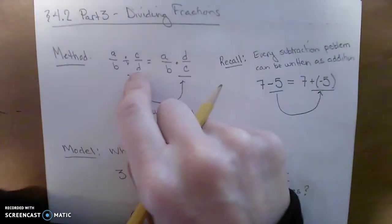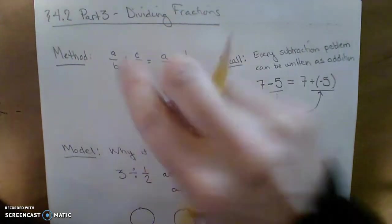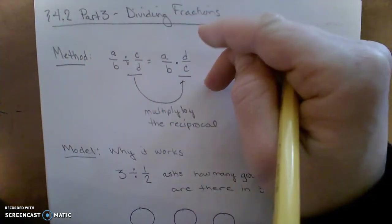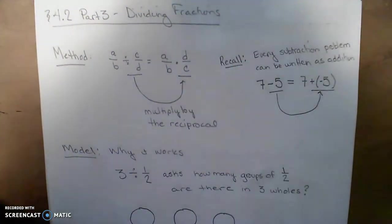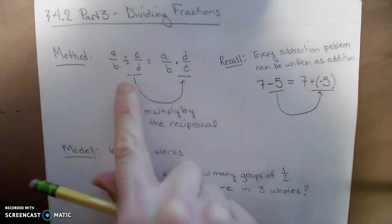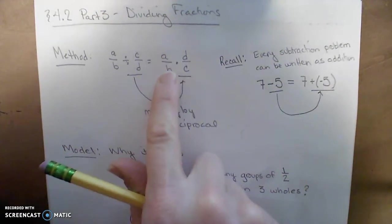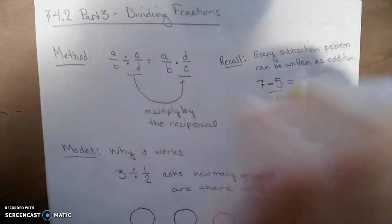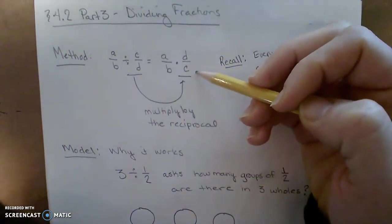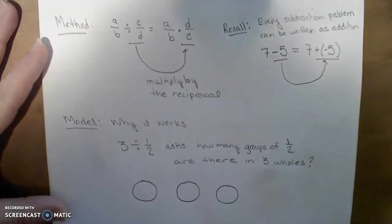So with fractions, the multiplicative opposite, the multiplicative inverse of a fraction, is the reciprocal of that fraction. Basically, you just flip it. The numerator becomes the denominator. Denominator becomes the numerator. So similarly, A over B divided by C over D can be written as A over B times the multiplicative inverse, which becomes D over C. And because we know how to multiply fractions, this is good news for us.